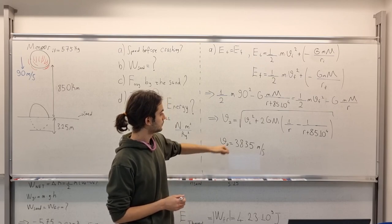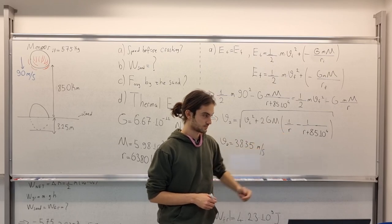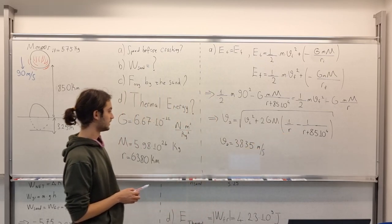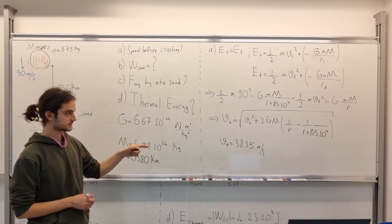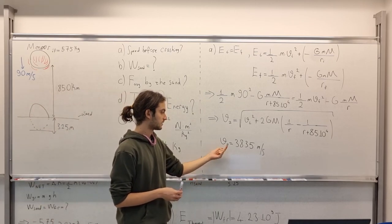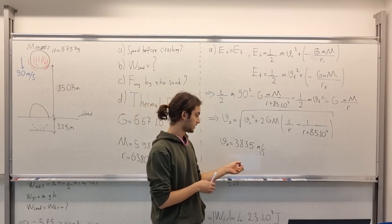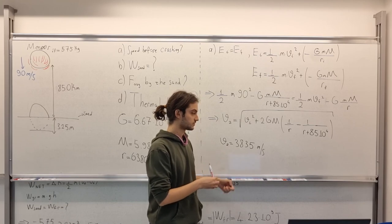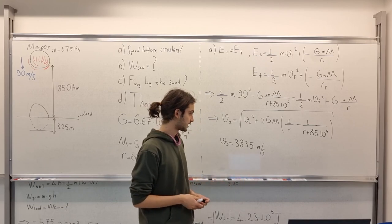Then we get this. V2 equals this equation. We are given our constants in here. Writing these down, substituting them, we acquire the velocity. Actually, speed. Which is 300 and... No.